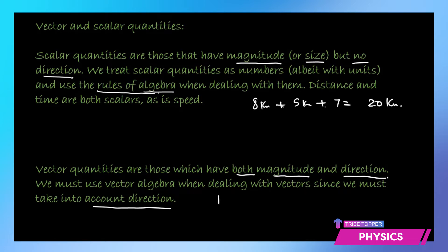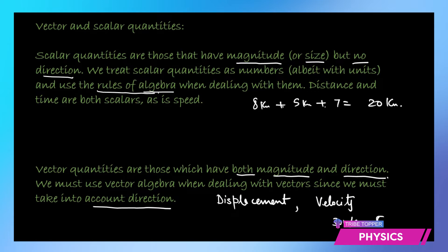So vectors are quantities which have both magnitude and direction. For example, displacement: distance has only magnitude, but displacement is distance traveled in a specific direction, so it is a vector quantity. Similarly, speed is a scalar — the speedometer of your car tells you the speed is 80 km/h but says nothing about direction. Velocity, however, is distance traveled in a particular direction, like 30 meters per second due east, which makes it a vector quantity.